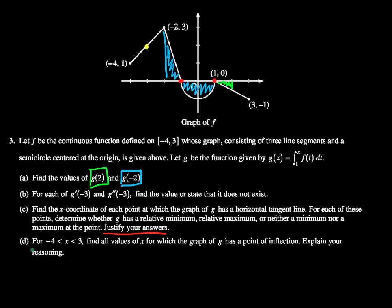All right, part D. For negative 4 less than x less than 3, find all values of x for which the graph of g has a point of inflection. Explain your reasoning.